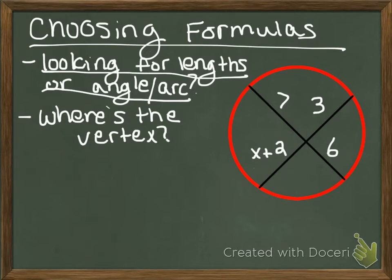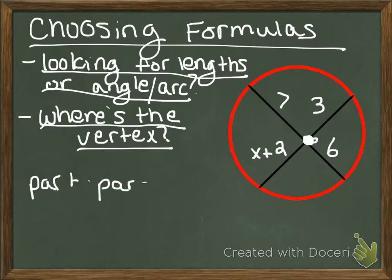Next thing I ask is where's the vertex? That means where do the two lines intersect? In this case they intersect inside the circle, so that means I'm going to use the formula part times part equals part times part.